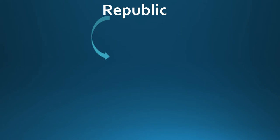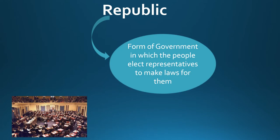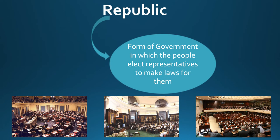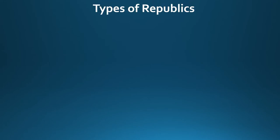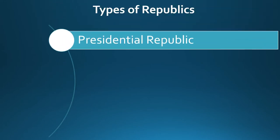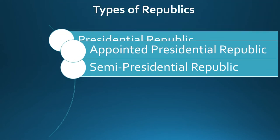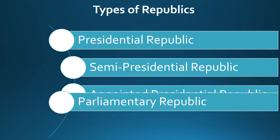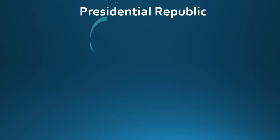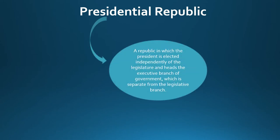A republic is a form of government in which the people elect representatives to make laws for them. There are four main types of republics today: presidential republics, semi-presidential republics, appointed presidential republics, and parliamentary republics. A presidential republic is a republic in which the president is elected independently of the legislature and heads the executive branch of government, which is separate from the legislative branch.